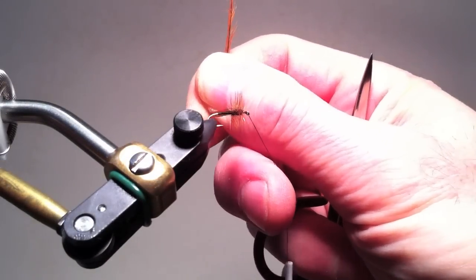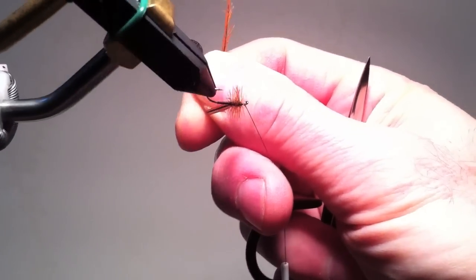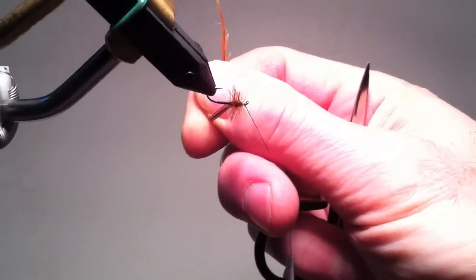I could tie off at this point but if I want a bushier head I simply wiggle the hackle back and forth while continuing the rotary function.